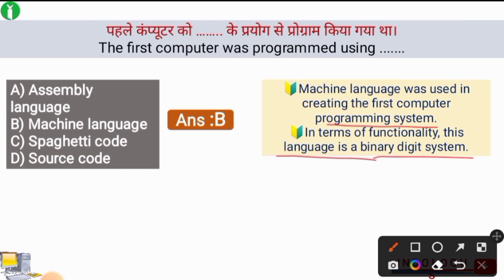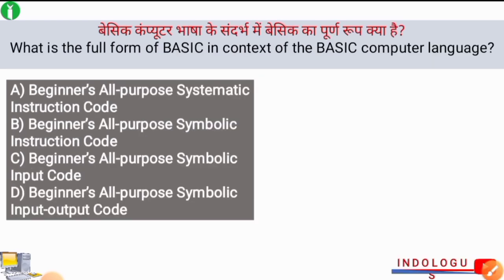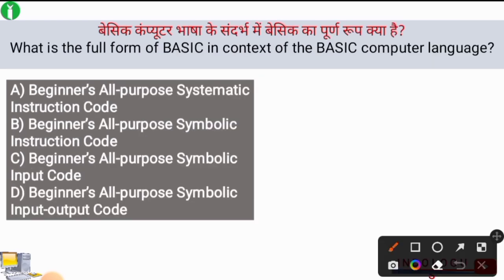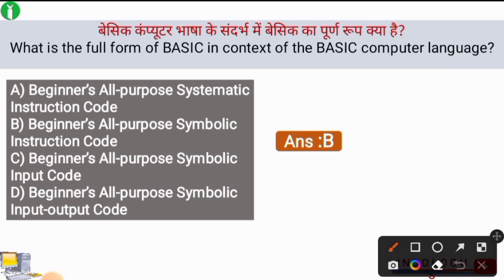Next question: What is the full form of BASIC in the context of the BASIC computer language? The right answer is option B: Beginners All-Purpose Symbolic Instruction Code. This is the full form of BASIC, which is a programming language.